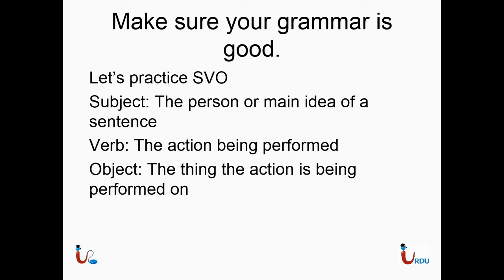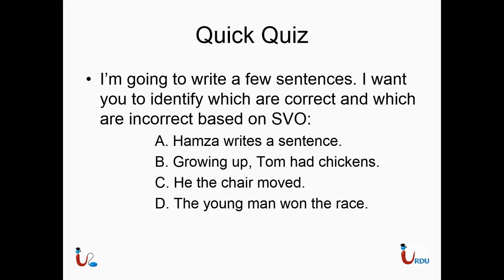This is so important that we're going to discuss this in every single lecture, just so you guys make sure you know it. It's going to get more advanced at every lecture, but this is going to be the basis of it. So: subject is the person or main idea of a sentence; the verb is the action being performed; and the object is the thing the action is being performed on. Let's take a quick quiz. I'm going to write a few sentences, and I want you to pause the video and find out which sentences follow the correct convention and which are incorrect.